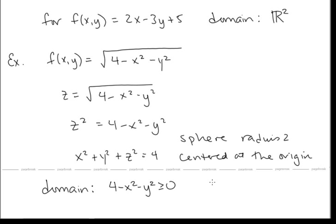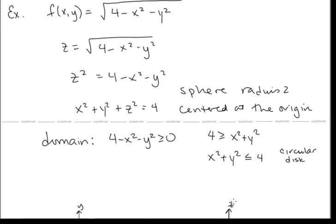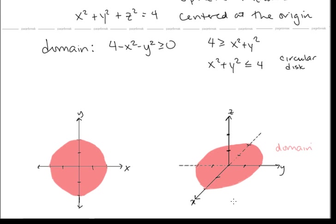Rearranging, we get x² + y² ≤ 4. We know that x² + y² = 4 is the circle of radius 2 centered at the origin, so the domain is the circular disk of radius 2 centered at the origin. That's the region of points in R² that we can plug into this function. We can graph this domain in two dimensions, or in three-dimensional space alongside the surface itself.